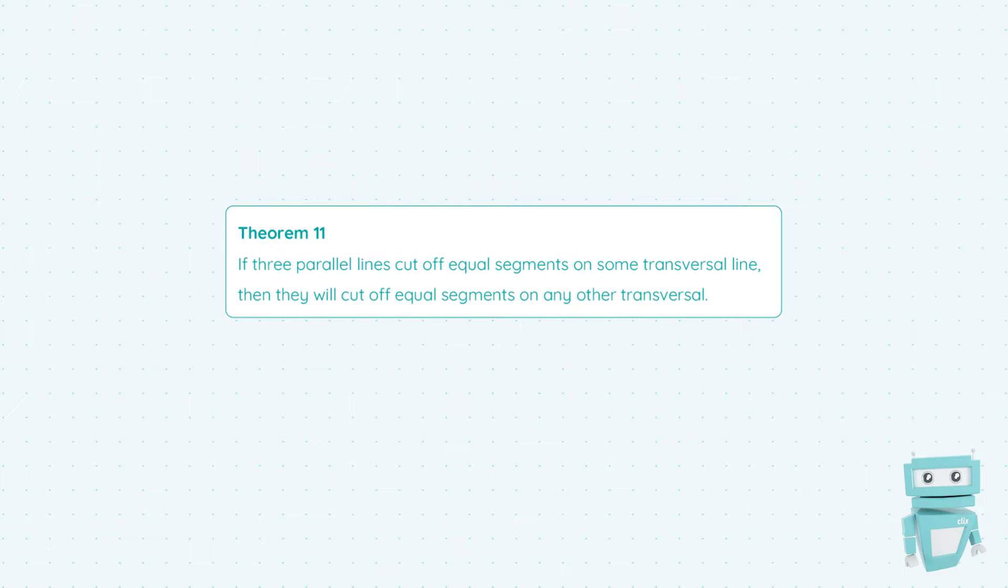Hi guys, Shauna here from StudyClicks, and in this video we're going to be taking a look at another theorem. This is Theorem 11, which states that if three parallel lines cut off equal segments on some transversal line, then they will cut off equal segments on any other transversal.